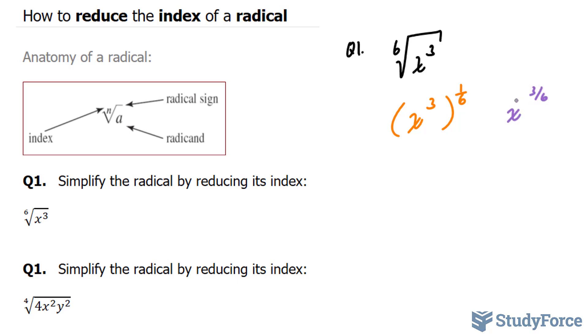And we can reduce three over six into half, where we have x to the power of half. And this can be brought back to its radical form as the square root of x. No need to write the index of two. It's assumed that it's there.